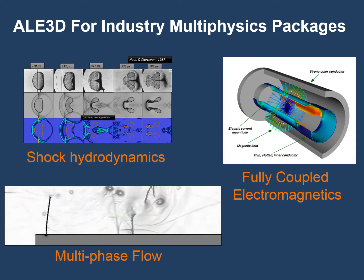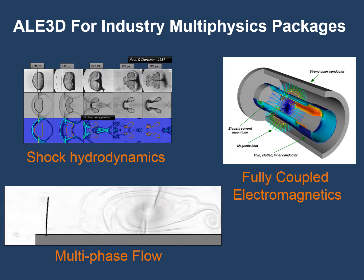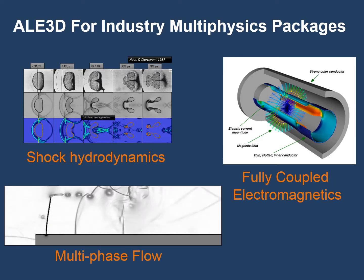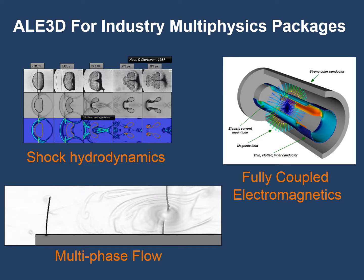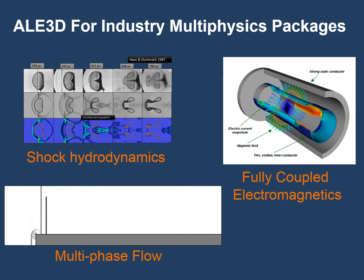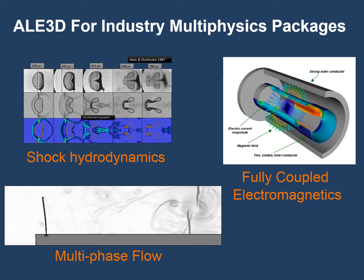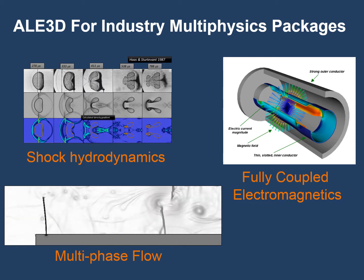AL3D for Industry is excellent for modeling shock hydrodynamics. On the top left is an example showing a comparison with experiment of a shock impinging on a helium bubble. The top row shows the radiographic images taken at various times, and the bottom rows show the AL3D results comparing very well to the experimental radiographs above. We also have fully coupled electromagnetics, and the simulation on the right is of a crushing slotted coaxial conductor. On the bottom is a simulation using our multi-phase flow package showing a shock impinging on a plate, with experimental data that also compares very well with the simulation.